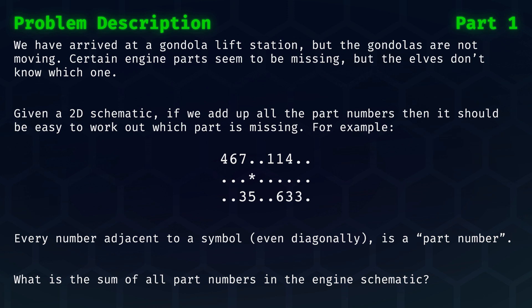We have arrived at a gondola lift station, but the gondolas are not moving. Certain engine parts seem to be missing, but the elves don't know which one. Given a 2D schematic, if we add up all the part numbers, then it should be easy to work out which part is missing.